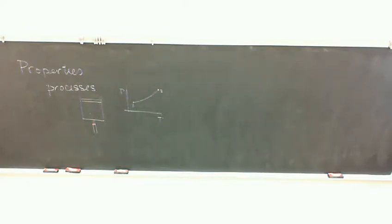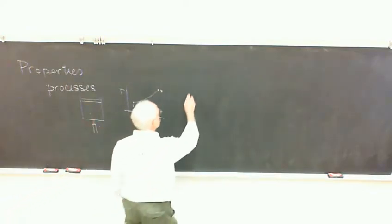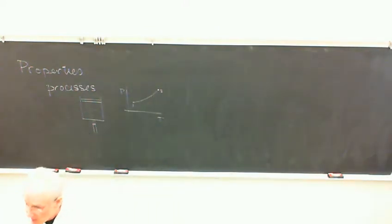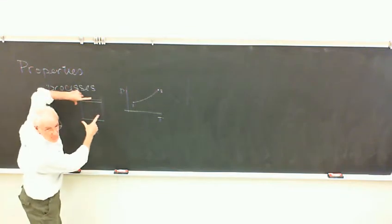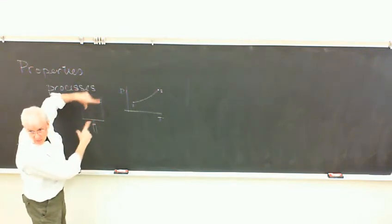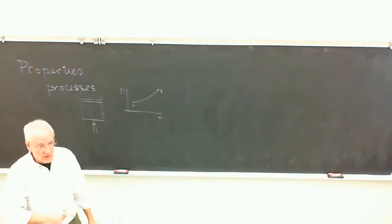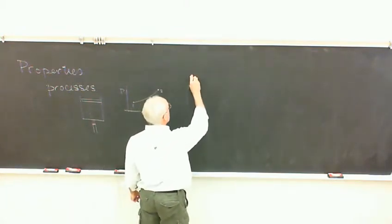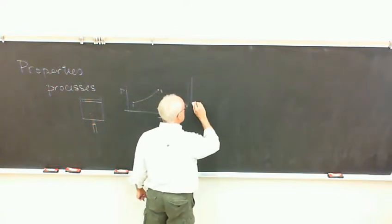For an open system, it's a little different than that. Remember, an open system is where the volume we're looking at stays the same and we let mass flow through it. Whereas in here, we're letting the mass stay the same and we'll let whatever happens to it happen. That was a control mass system. An open system is a control volume system. So for example, we'll look at turbines.